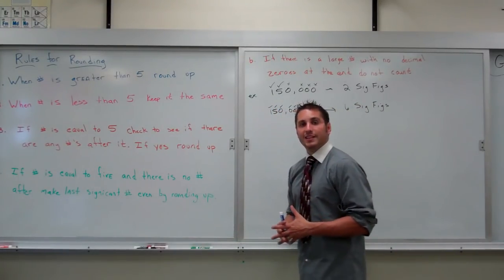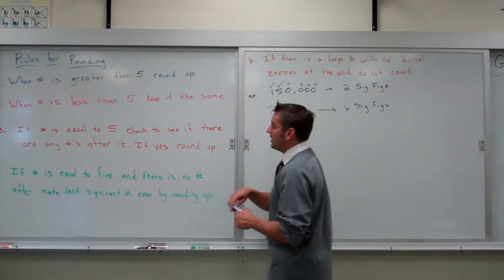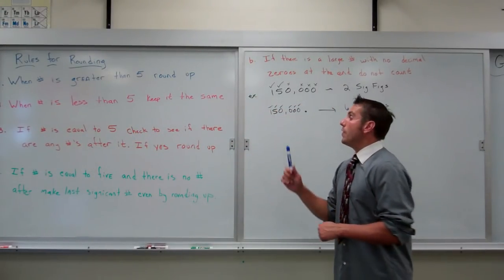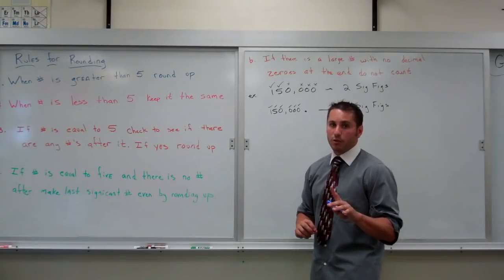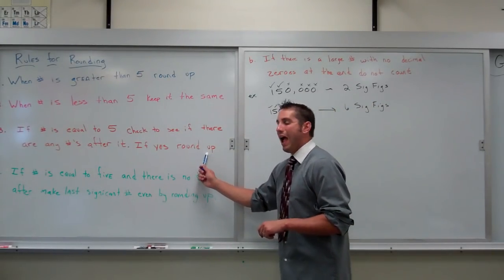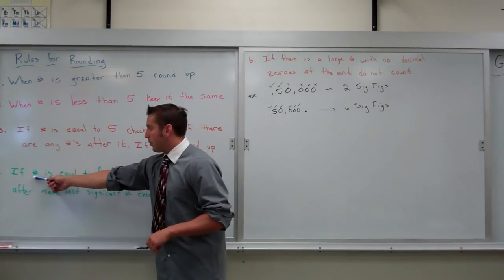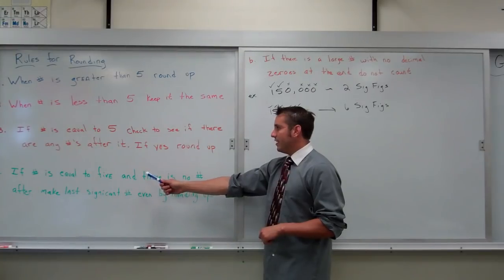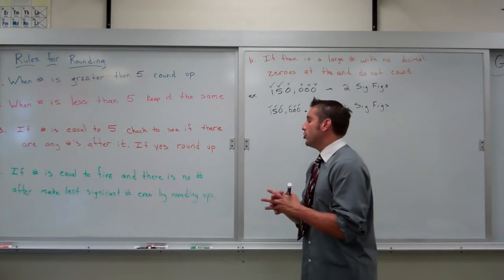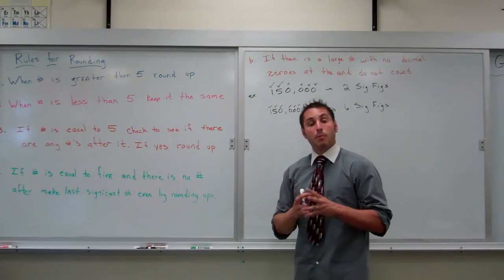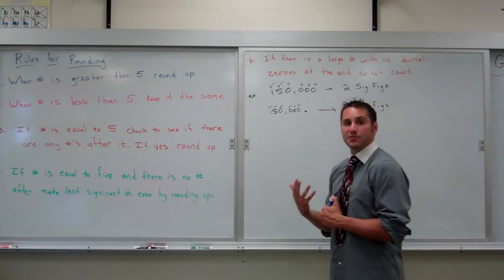The tricky scenario is when you hit the last sig fig and the next number is a five. If that number is a five, there are two separate things we do. First, we check to see if there are any numbers after the five — including zeros. If there are numbers after it, you round the last significant digit up. If the next digit is a five and there is no number after it, you round your last significant figure to make it an even number. If it's already even, it stays the same; if it's odd, it rounds up.